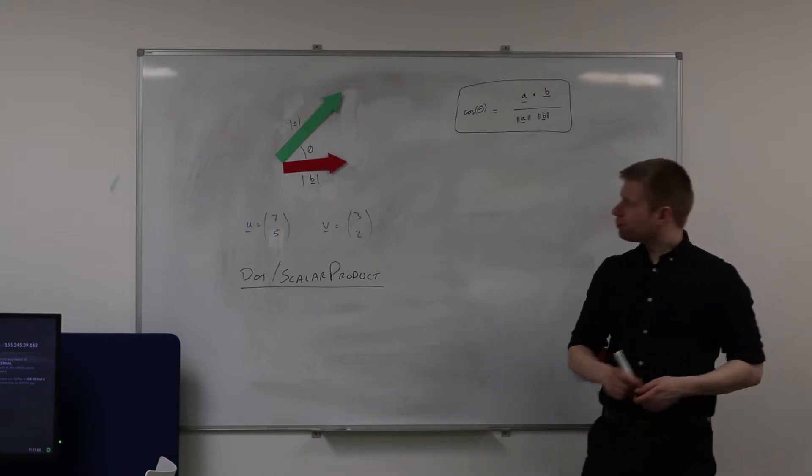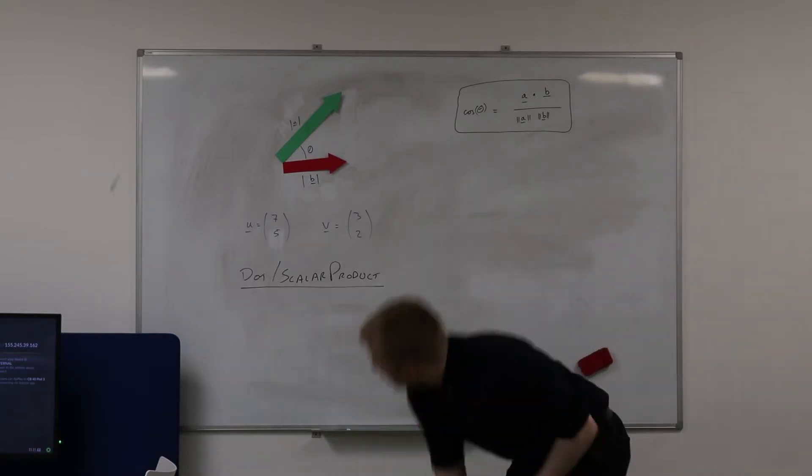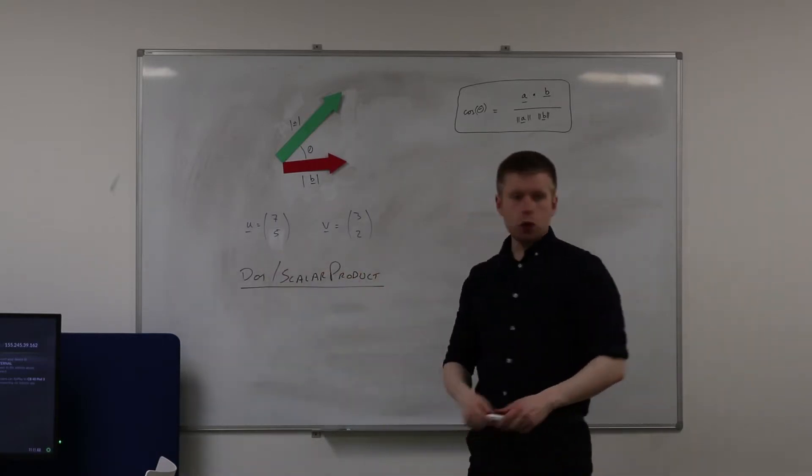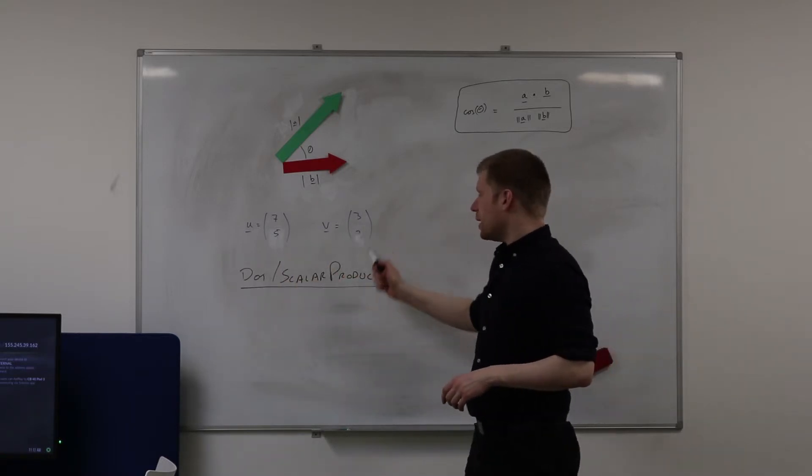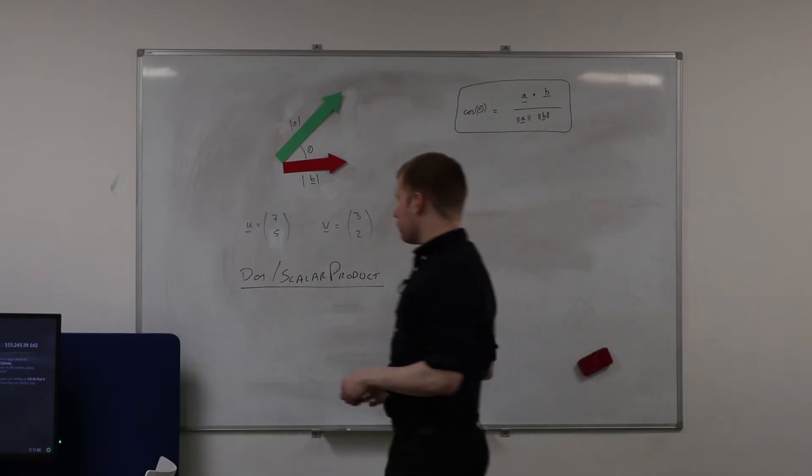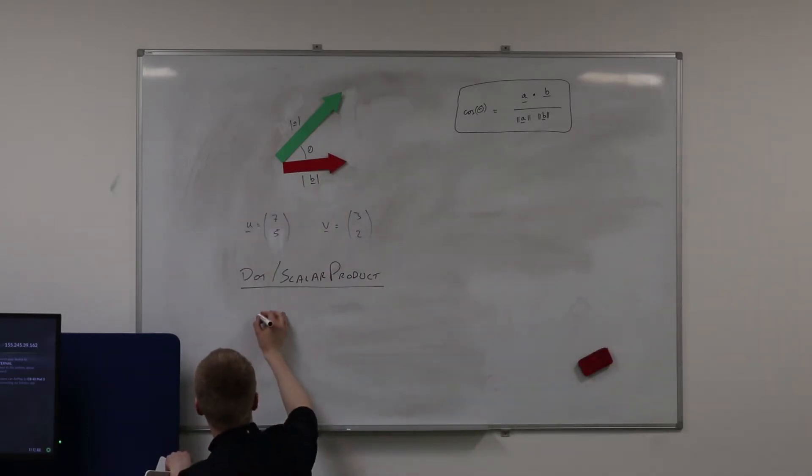And it's really not that bad. So let's say for example I've got two vectors here, u and v. u is 7, 5 and v is 3, 2. And if I want to find the dot product of these two vectors, I would write u dot v.